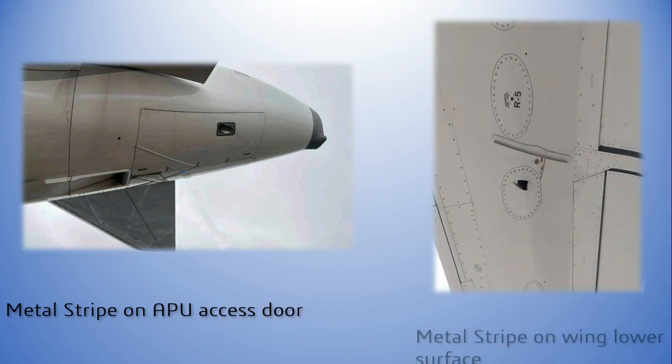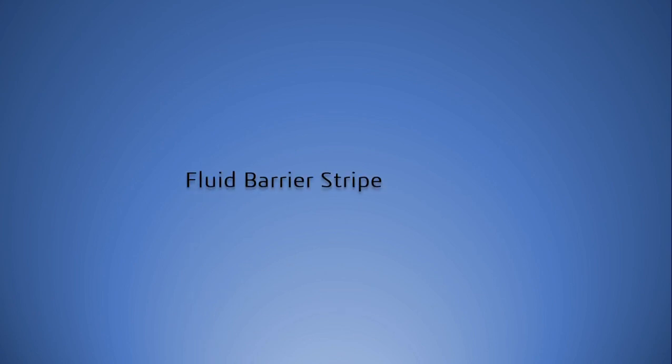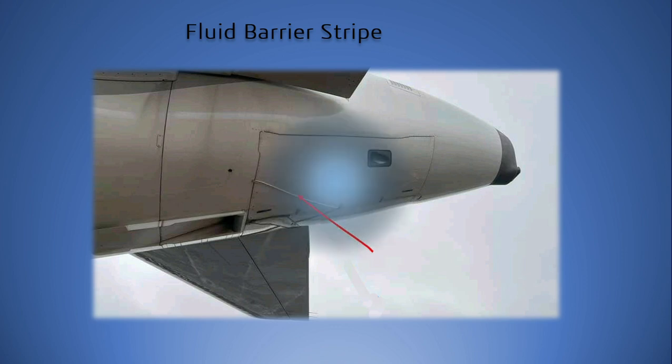Similar to the rain gutter metal strip, we can also find a metal strip at two other locations on an aircraft: first on the APU access door, and the other on the wing lower surface near the wing tank vent. The metal strip on the APU access door is called a fluid barrier strip.